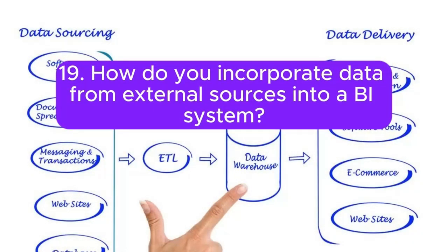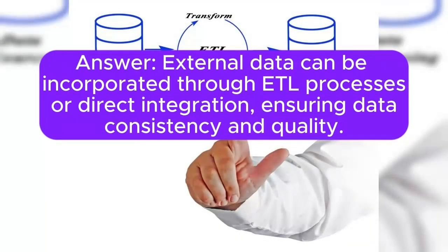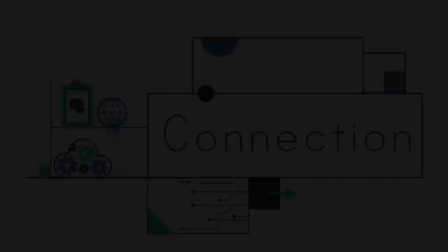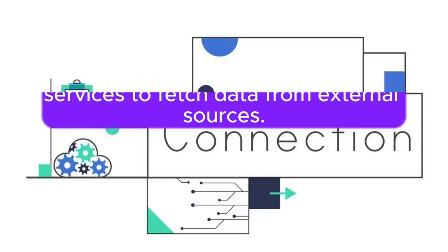Question 19: How do you incorporate data from external sources into a BI system? Answer: External data can be incorporated through ETL processes or direct integration, ensuring data consistency and quality. Use connectors, APIs, or web services to fetch data from external sources.